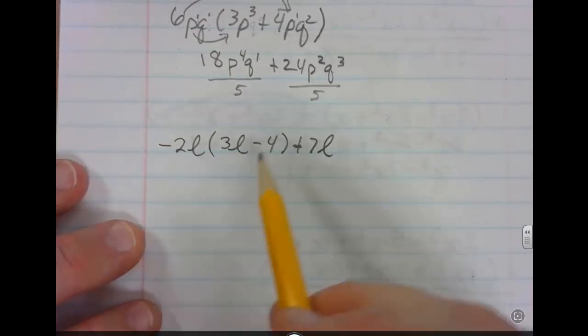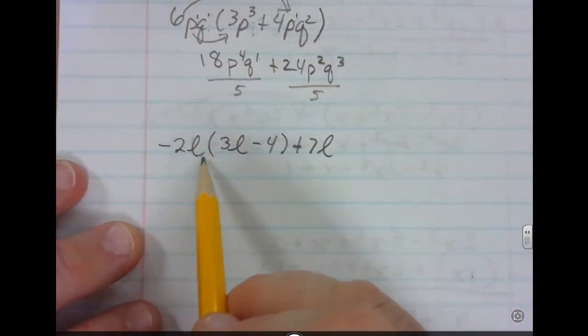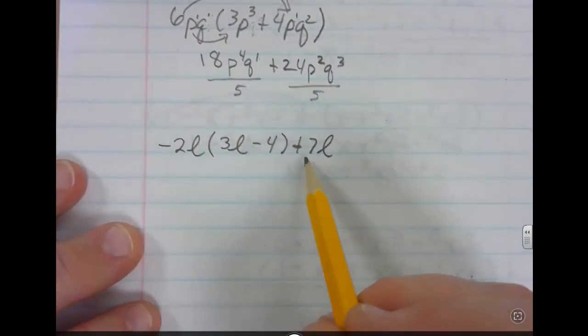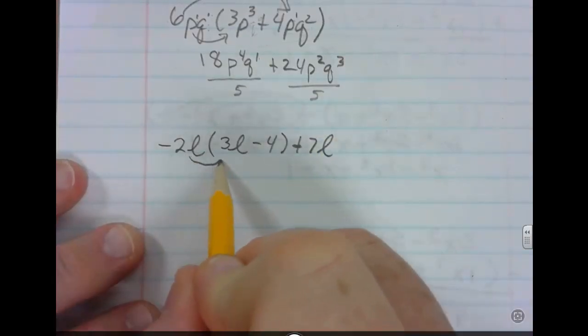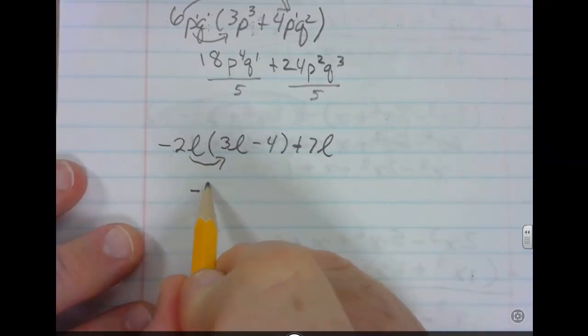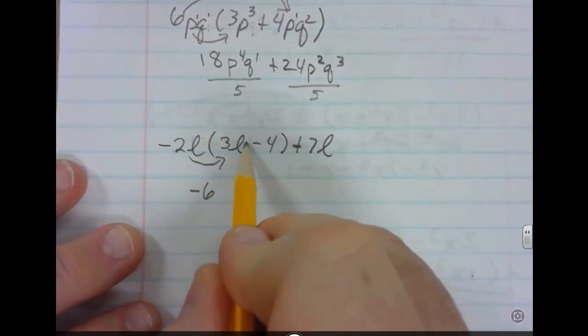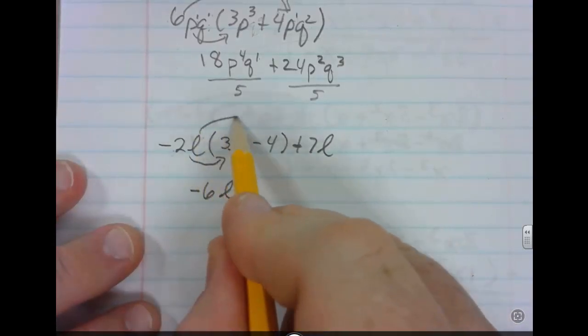This last one here, we're just going to distribute a negative. And then after we distribute, we can simplify further because you can see we have an L out here. So let's distribute here first. So this is negative 2 times 3 is going to give you negative 6. L to the first times L to the first is going to give you L to the second.